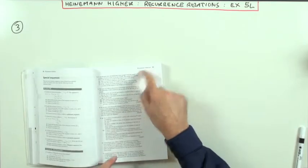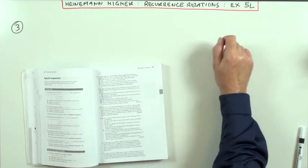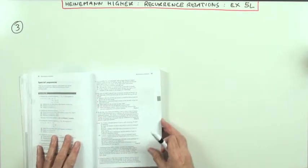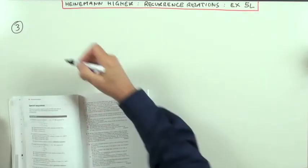Heinemann Higher, Chapter 5, Recurrence Relations, Mixed Questions Exercise 5L. Number 3, again, wordy questions.